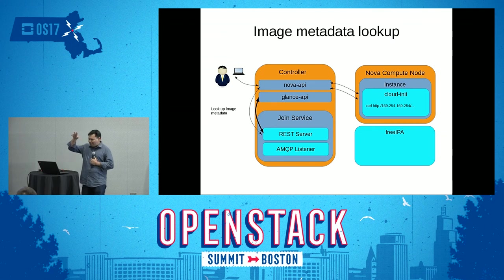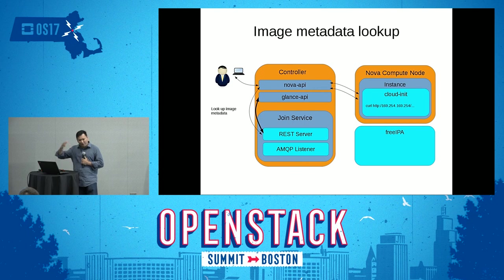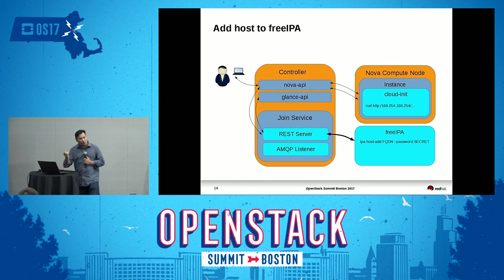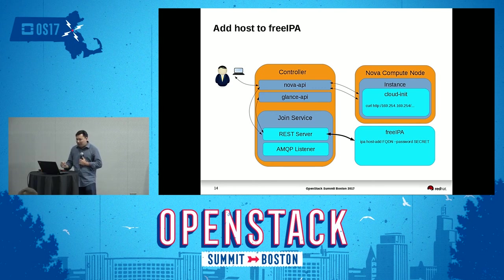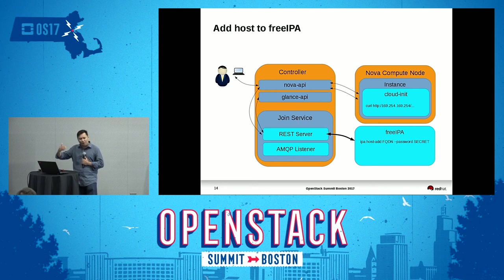NovaJoin will then check with Glance to make sure that the image actually exists, and it will also check to see whether IPAEnroll equals true — either in the Nova parameters passed in or in the image data. If so, we'll proceed: we'll generate a one-time password, and then pass that to FreeIPA as part of a host add command. This adds a host onto IPA with that OTP. The host is not yet actually enrolled at this point, but it will also create all the various services. What we have is an OTP and an entry saying that at some point in the future, this host is going to enroll with this OTP.